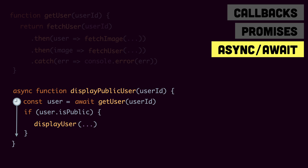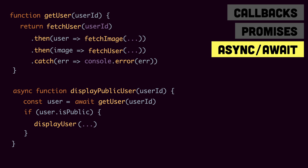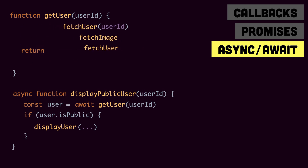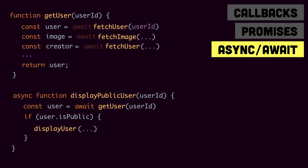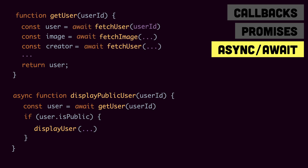Now let's look at the getUser function and see how to convert it to the async/await version. We have fetchUser which returns a promise, fetchImage returns a promise, and fetchUser again returns a promise. If we convert this to synchronous-style code, we put await in front of each promise and async in front of the getUser function. When this function executes, it will wait for the user, move on, wait for the image, move on, wait for the creator, and then continue. Comparing this async/await version with callbacks or promises, our code is much simpler and easier to extend.